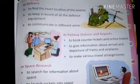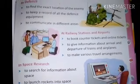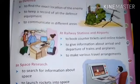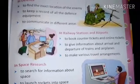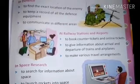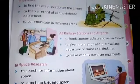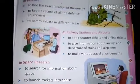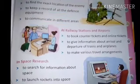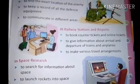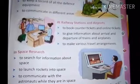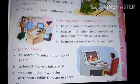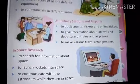Number 8, at railway stations and airports. Computers are used to book counter tickets and online tickets, to give information about arrival and departure of trains and airplanes, and to make various travel arrangements. Number 9, in space research. Computers are used to search for information about space, to launch rockets into space, and to communicate with astronauts while they are in space.